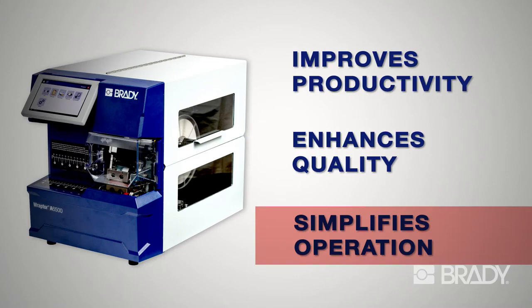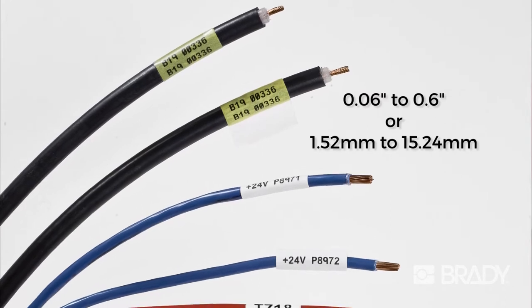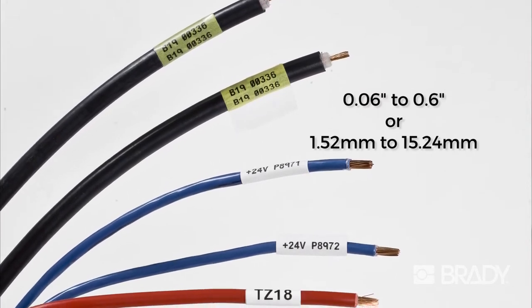With its self-adjusting wrapping mechanism, it can identify wires from 0.06 inches to 0.6 inches diameter without mechanical adjustments.